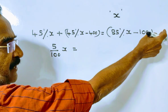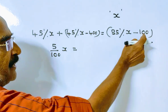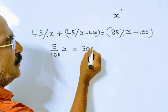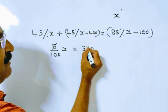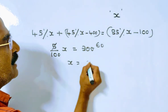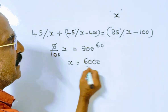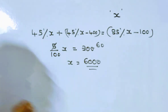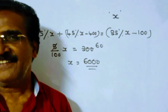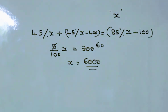So 5% of X equals 300, therefore X equals 6000. The total number of votes is 6000. Thank you friends.